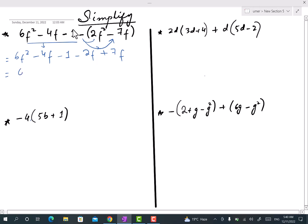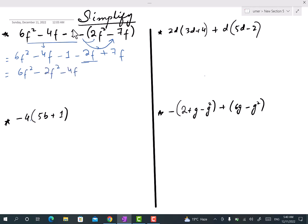Now arranging and keeping together the terms with same variable, we will get 6f² minus 2f² minus 4f plus 7f and minus 1. We have 6f² minus 2f², so we will simply subtract: 6 minus 2 and f² will remain the same, so 6 minus 2 is 4f² minus.